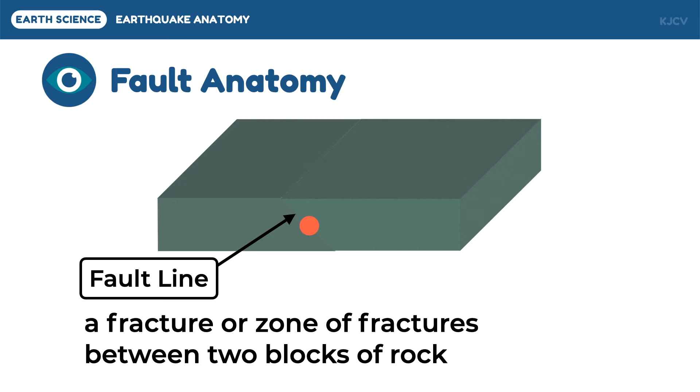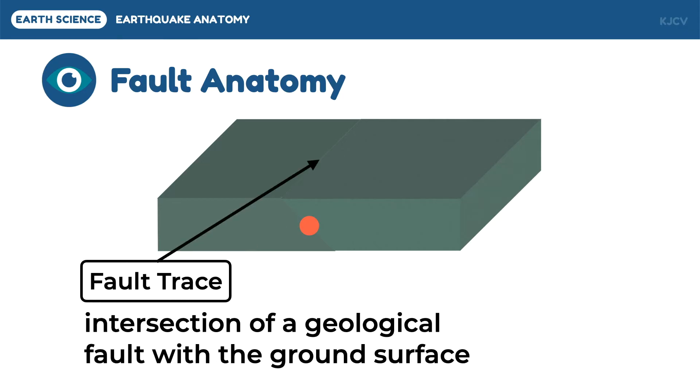Take note that the fault line is the fracture in the Earth's crust. The fracture visible on the Earth's surface is called the fault trace. This is also defined as the intersection of a geological fault with the ground surface.